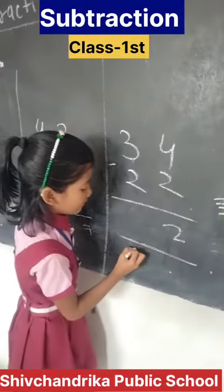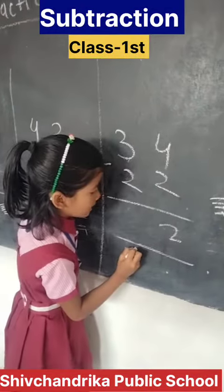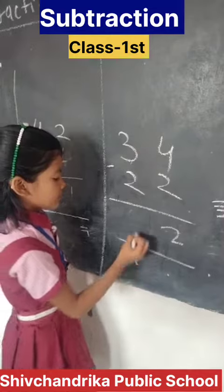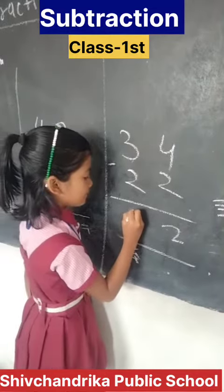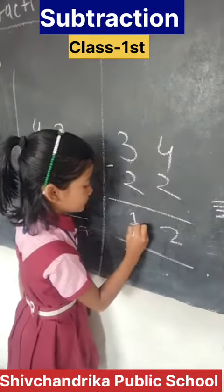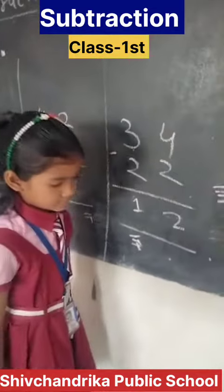Now I count the left lines. One — this is one number. One, two. Very good! On to the next column.